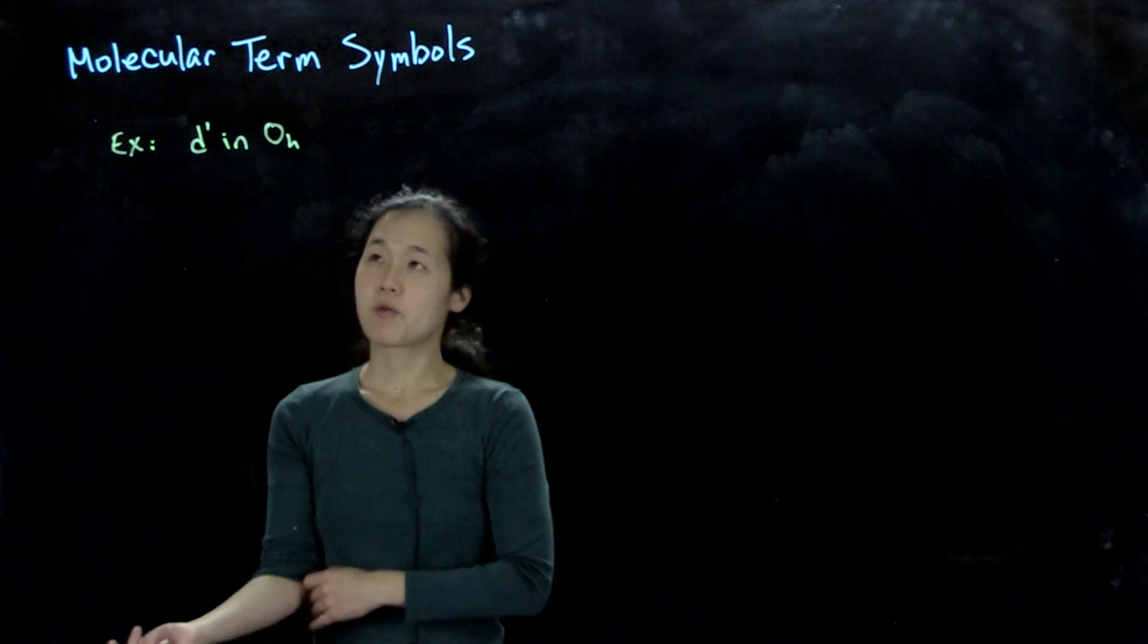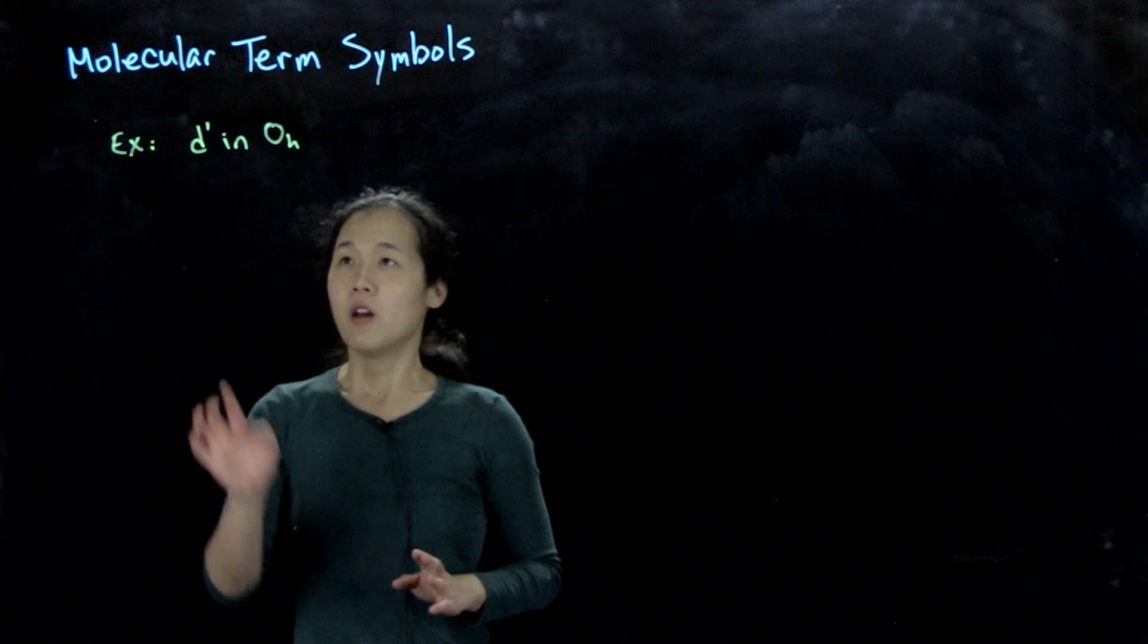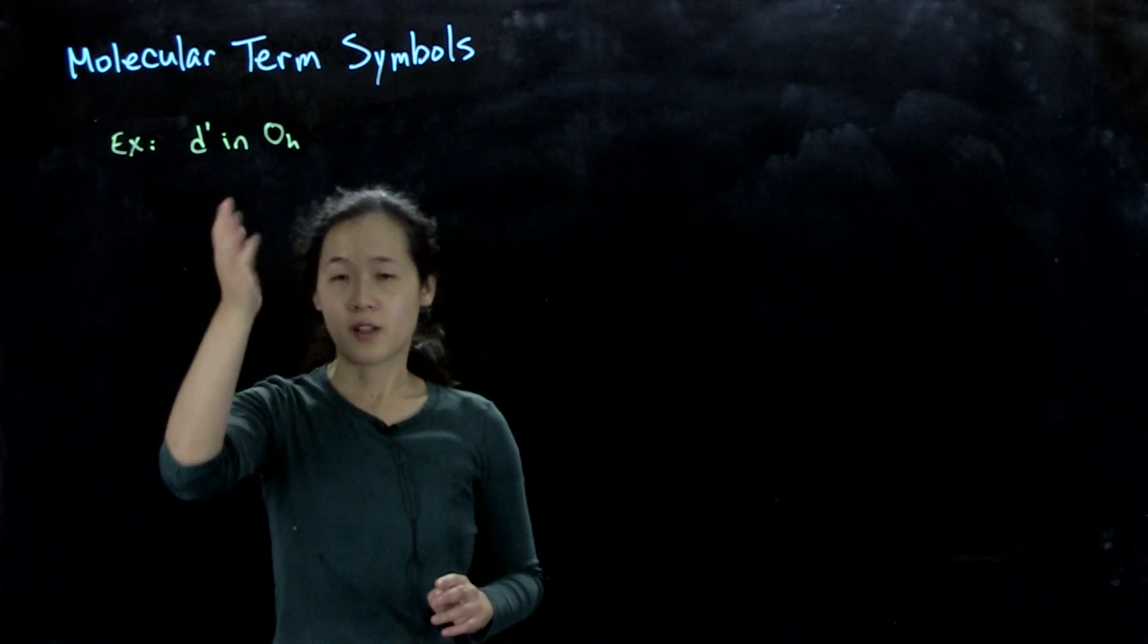Let's do maybe a more rigorous way of using orbital symmetry. So for the easy example, let's think about what happens if you have one d electron in an octahedral ligand field.